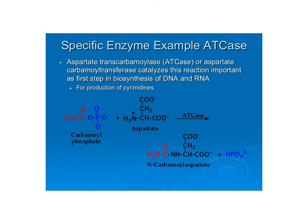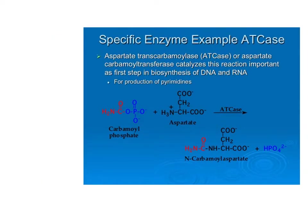Now we're going to look at a specific example: aspartate transcarbamoylase, abbreviated ATCase. The official classification is aspartate carbamoyl transferase. It's a transferase enzyme, which means it's transferring a functional group — specifically the carbamoyl portion — to aspartate. ATCase is important because this is the first step for making pyrimidines.